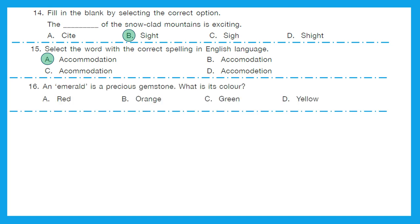Question 16: An emerald is a precious gemstone. What is its color? It is green color. Option C is the right answer.